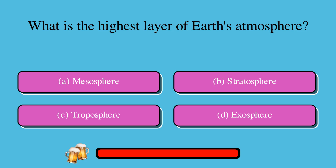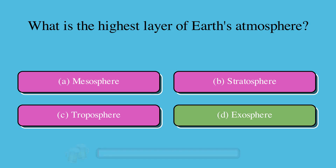What is the highest layer of Earth's atmosphere? A. Mesosphere, B. Stratosphere, C. Troposphere, or D. Exosphere? The correct answer is D. Exosphere.